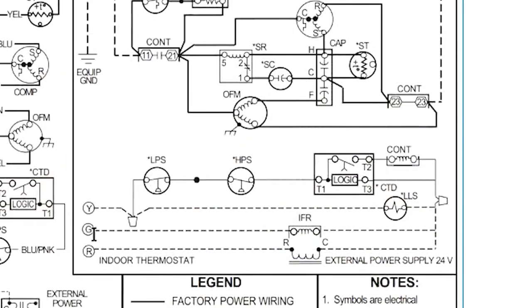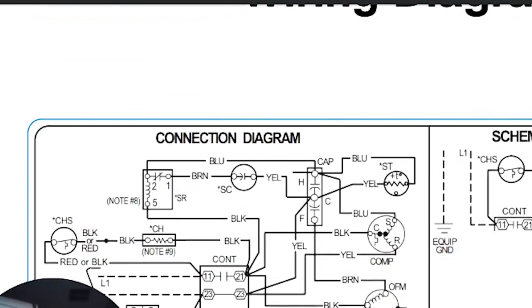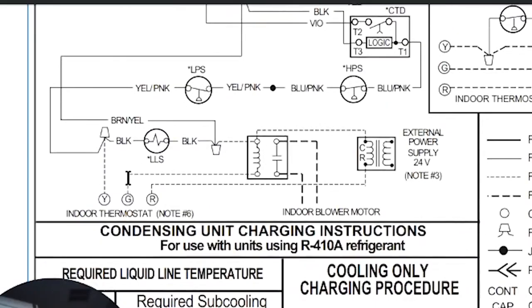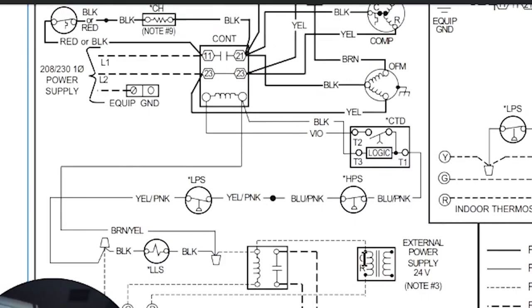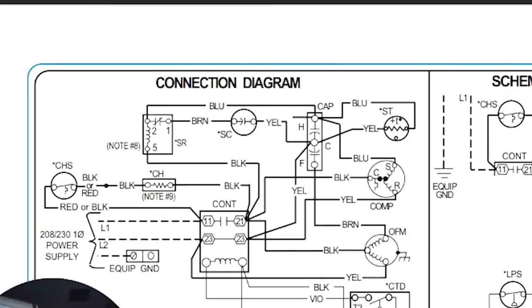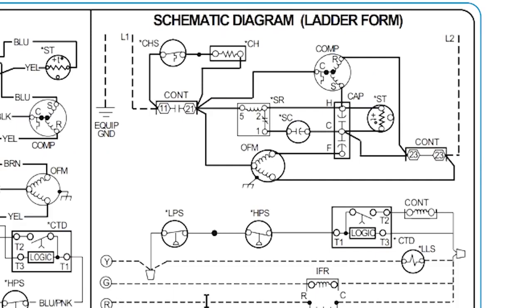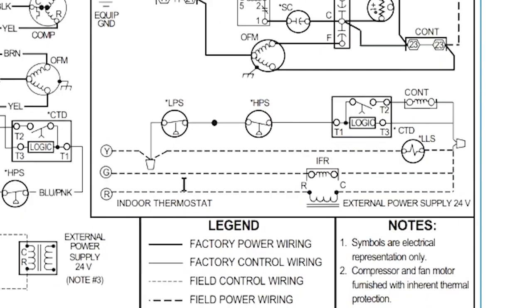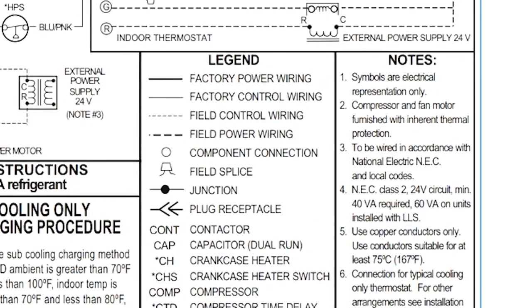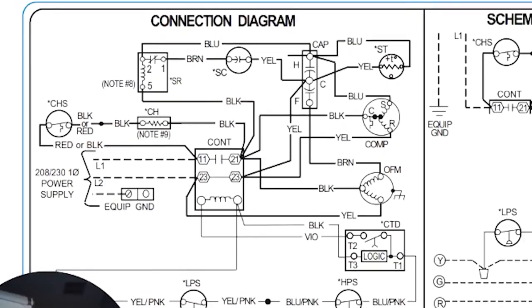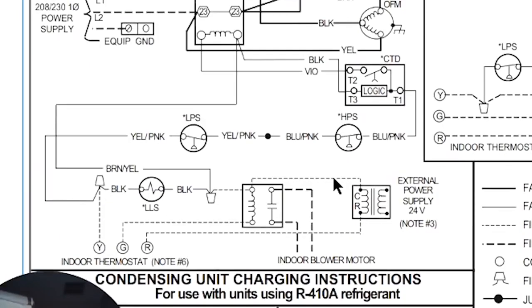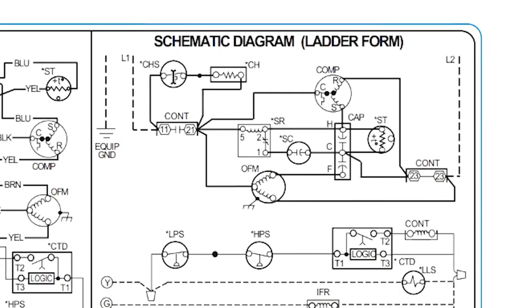An indoor fan relay is powered by G — that's all on the inside. Looking at the connection diagram: G powers a magnetic coil, which energizes a contact that brings on the indoor blower motor. The blower side isn't shown here because this diagram is only for the outside unit. We have the external power supply — the transformer inside — providing R, connected on the inside. This is wired for a basic straight-cool thermostat; it's not a heat pump setup.